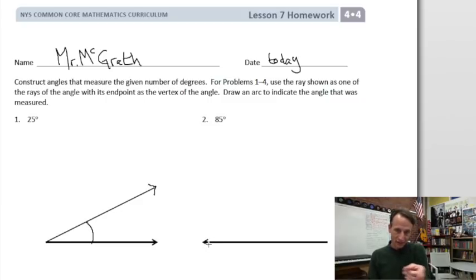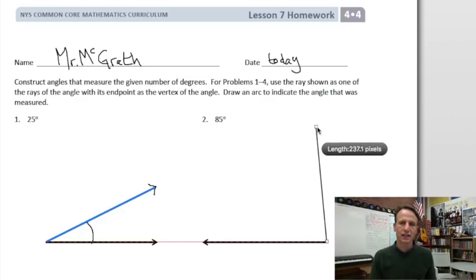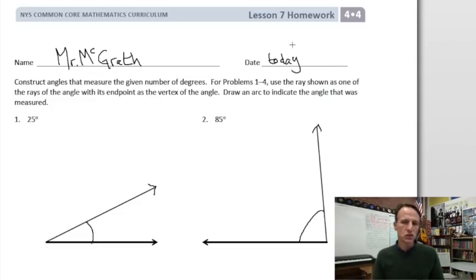Notice on this one the arrow is going the other way, so this ray is pointing in that direction. Here's our vertex, we're going to start from there. This would be 90, so 85 is going to be just shy of that, so it is acute, it's less than 90. Your angle should look something like that, and again draw that arrow at the end of it and the arc to indicate this is the angle.